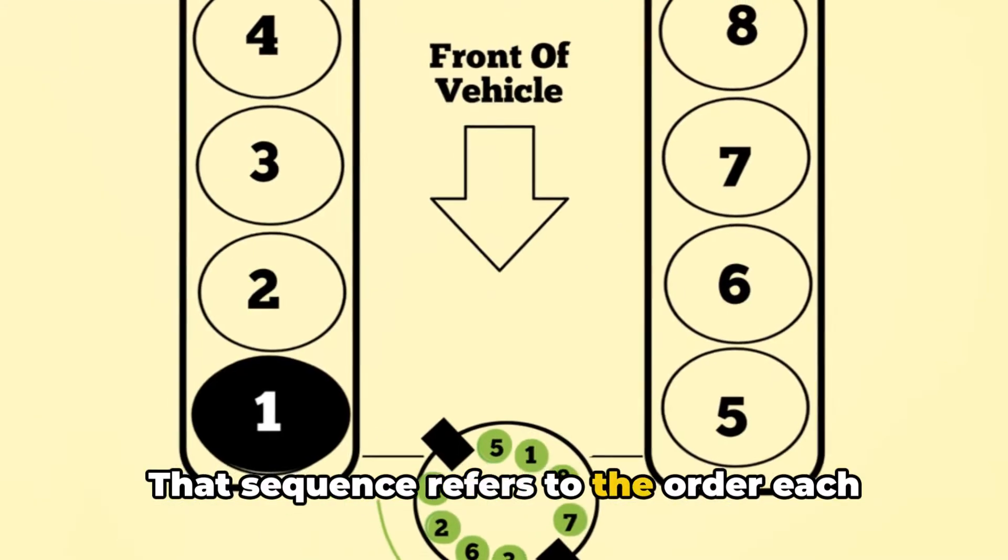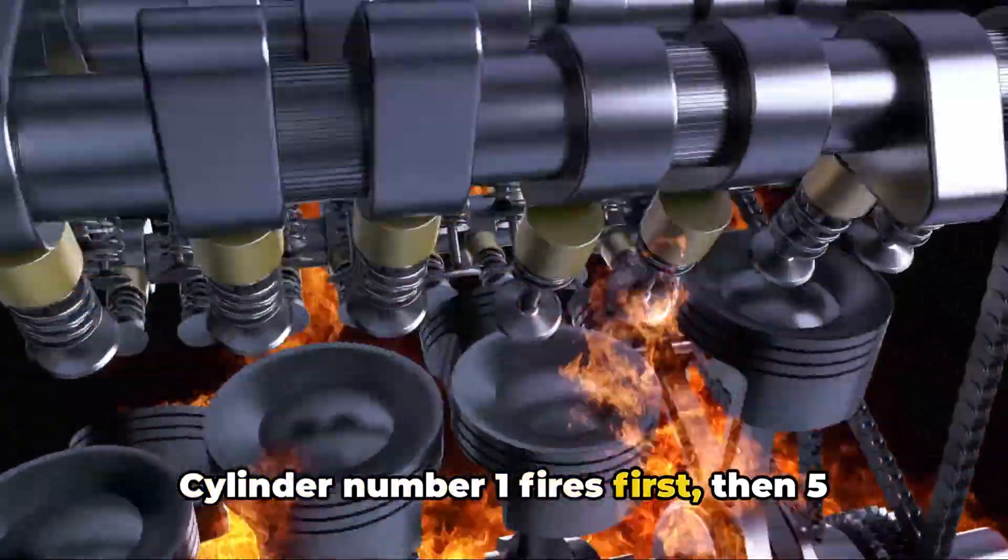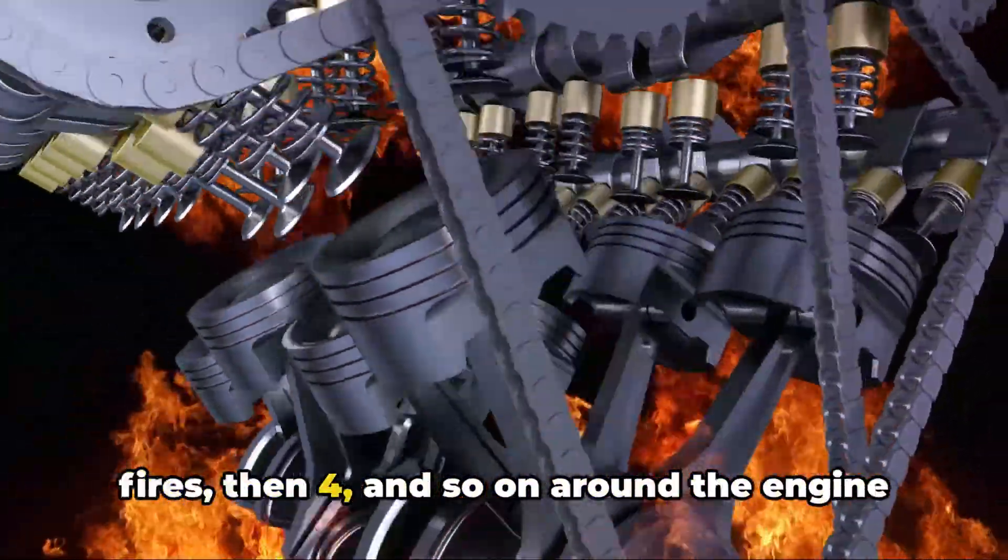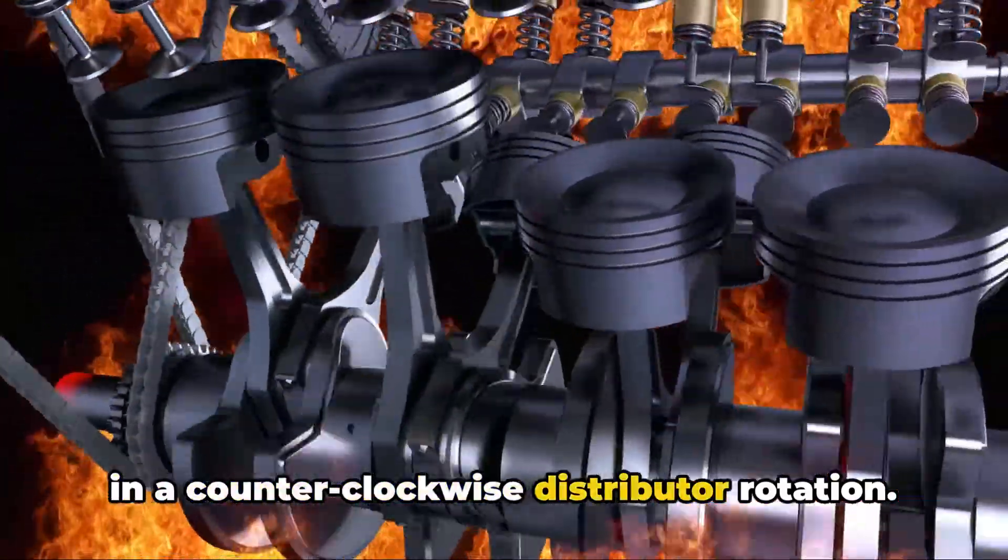That sequence refers to the order each cylinder fires in. Cylinder number 1 fires first, then 5 fires, then 4, and so on around the engine in a counter-clockwise distributor rotation.